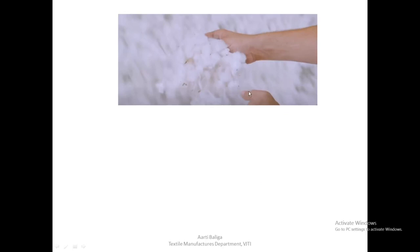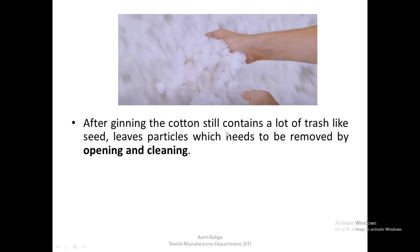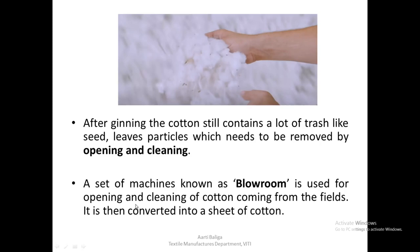Although seeds are removed during ginning, the baled cotton still contains quite a lot of trash — seeds, leaves, and particles — which need to be removed by opening and cleaning. A set of machines known as the blow room is used for opening and cleaning of cotton from the fields. It is then converted into a sheet of cotton.